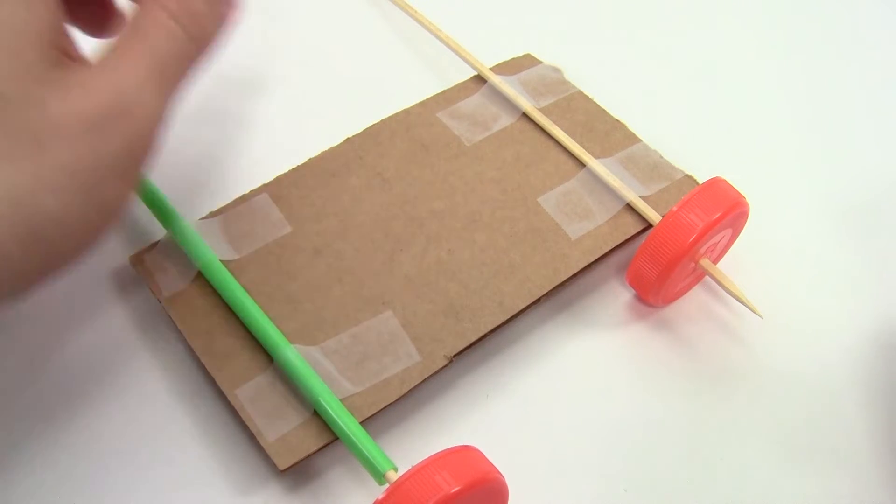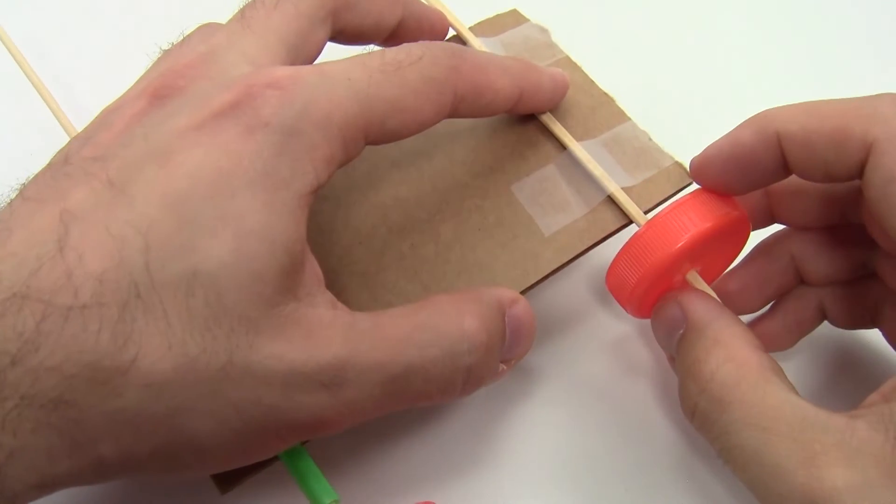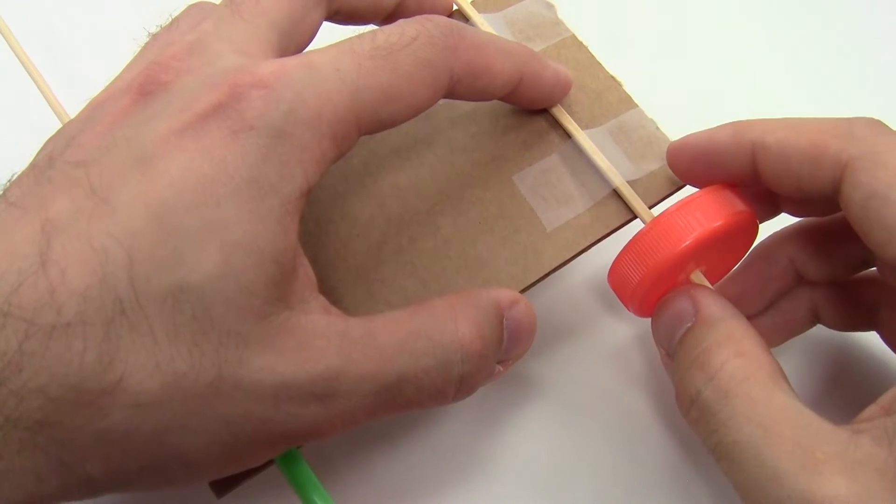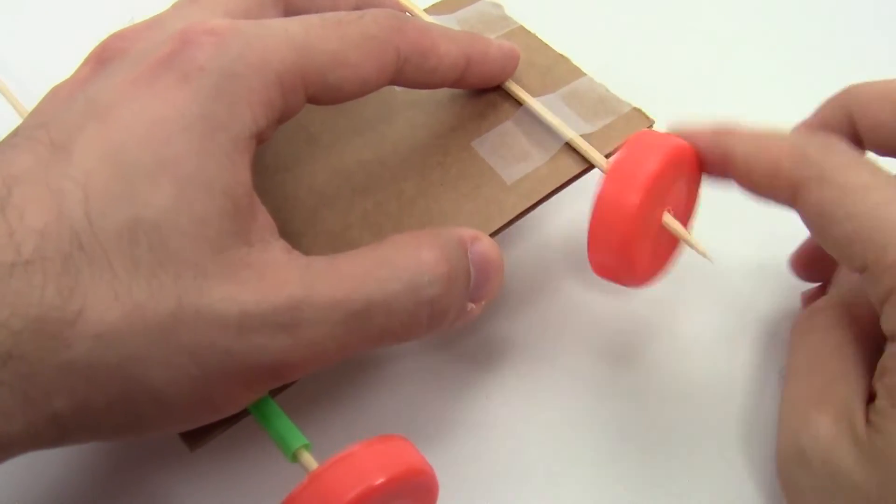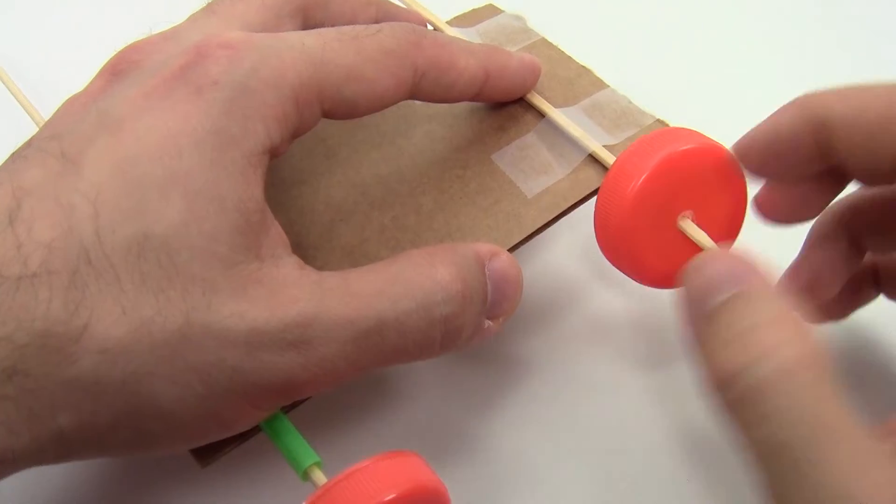There's more than one way to connect the wheel and build the axle. For example, here, the wooden skewer is taped directly to the piece of cardboard, and the wheel spins on the skewer, so the entire axle doesn't spin.